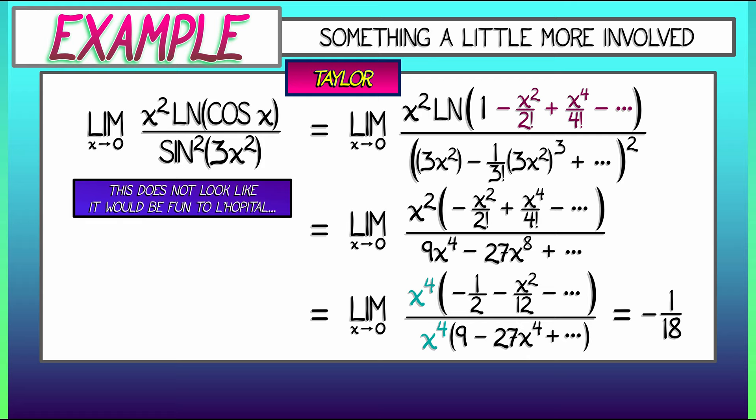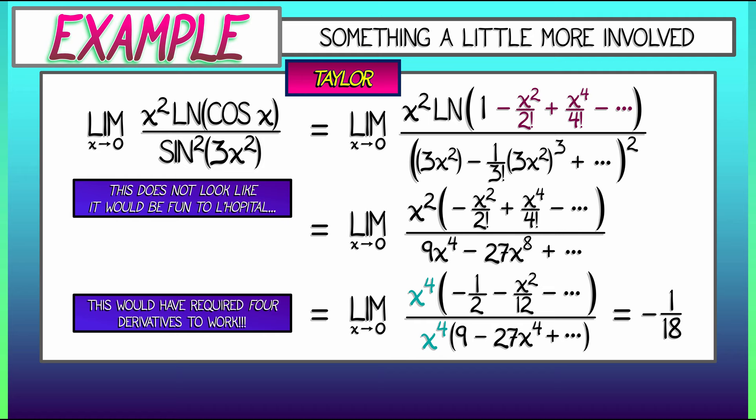Could we have done this with L'Hopital's rule? Yes. What would it have taken? It would have taken computing derivatives of x squared log of cosine of x, that's a pain. And because it's the fourth order terms that wound up being significant, we would have had to apply L'Hopital's rule four times. That would have been painful. Could it be done? Yes, of course. But I think in this case, Taylor series was the much better way to go.